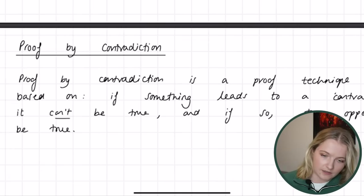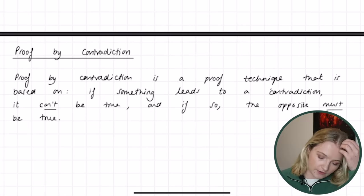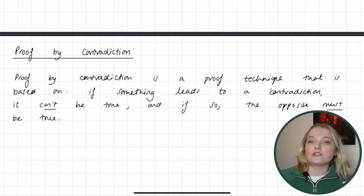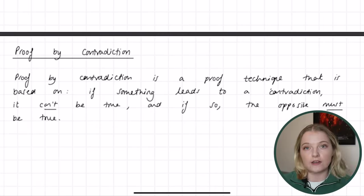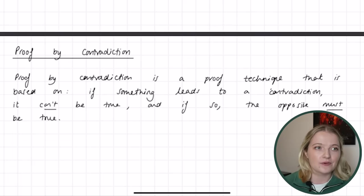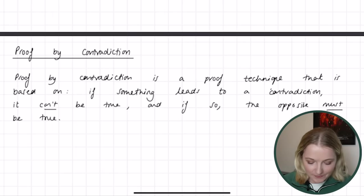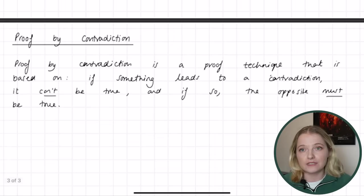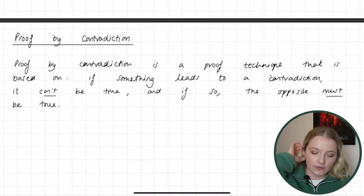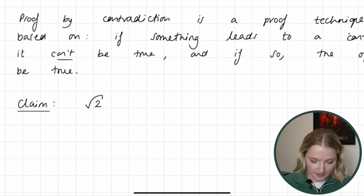So if you can contradict something, then essentially what you started with is false. Let's jump straight into an example — I absolutely love this one, and I actually have a video on my channel about the history behind it. So the claim we're going to make — as I mentioned in the first video, but again this is self-contained — when we start formulating a proof, we put a claim. The claim is: root 2 is irrational.